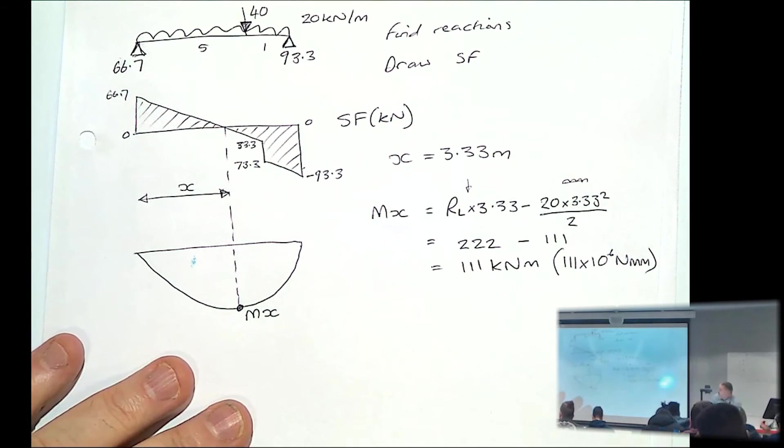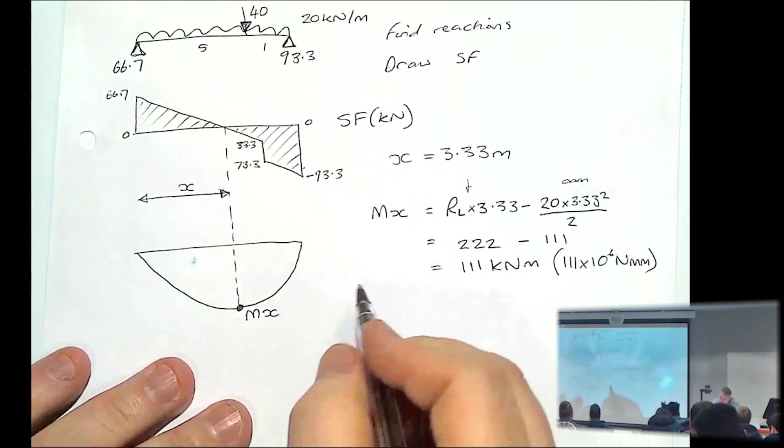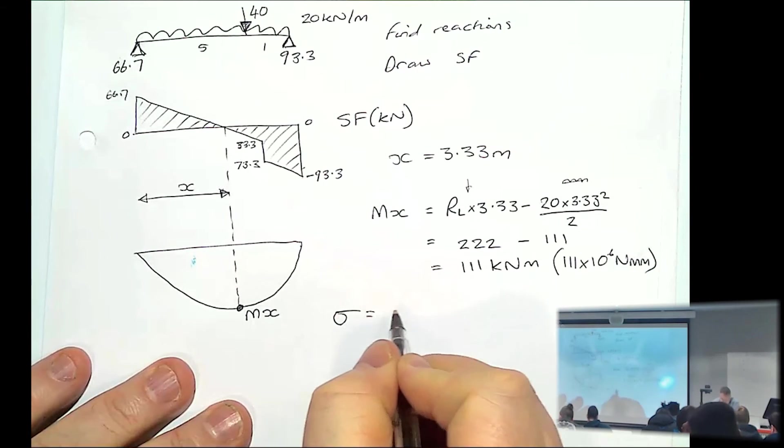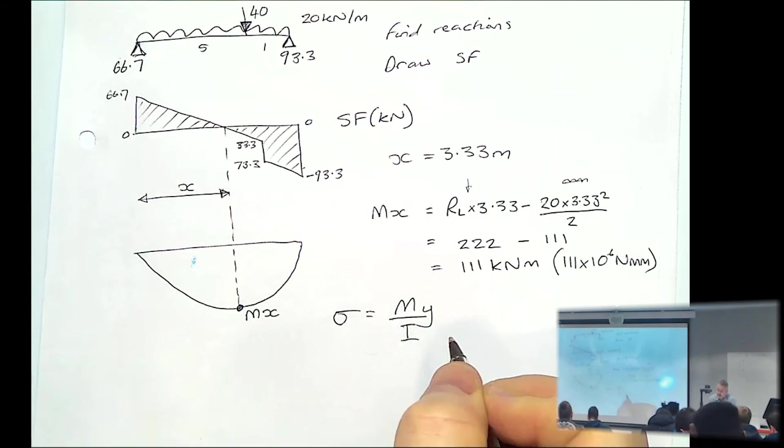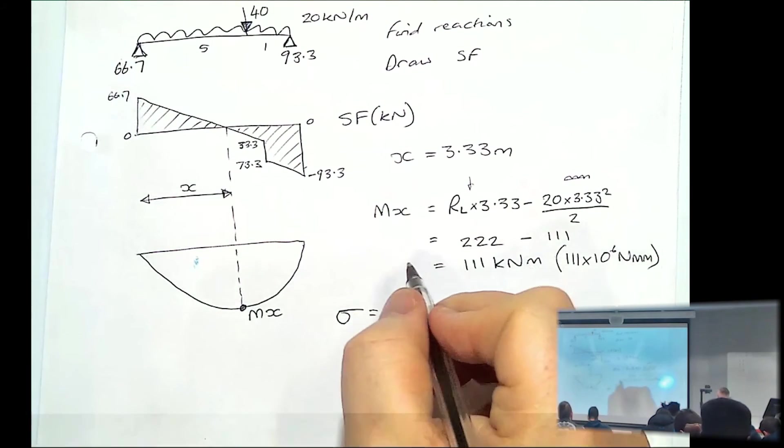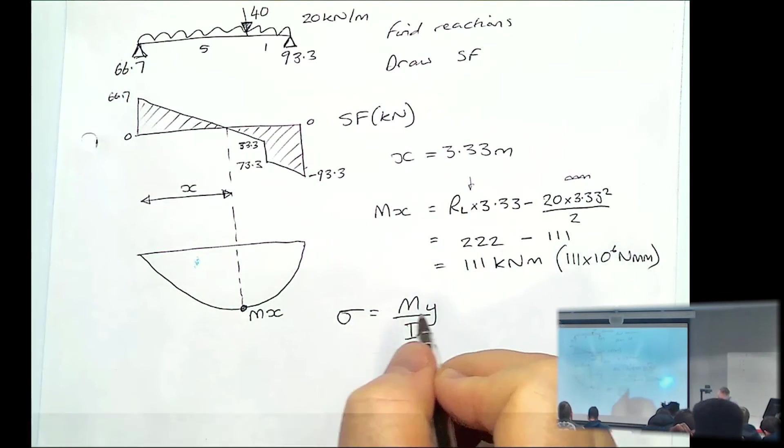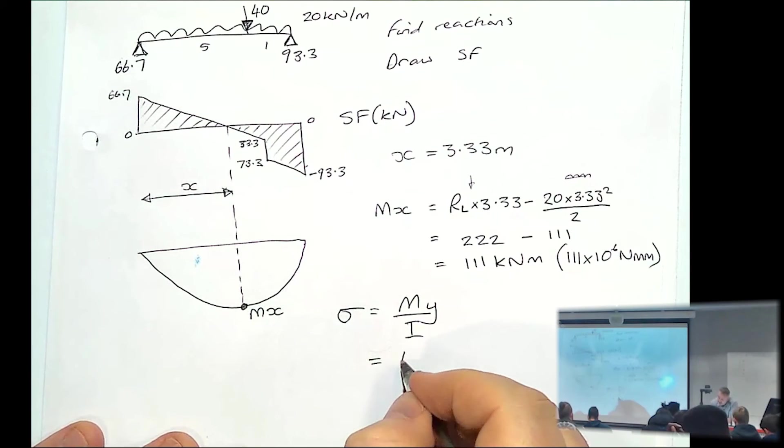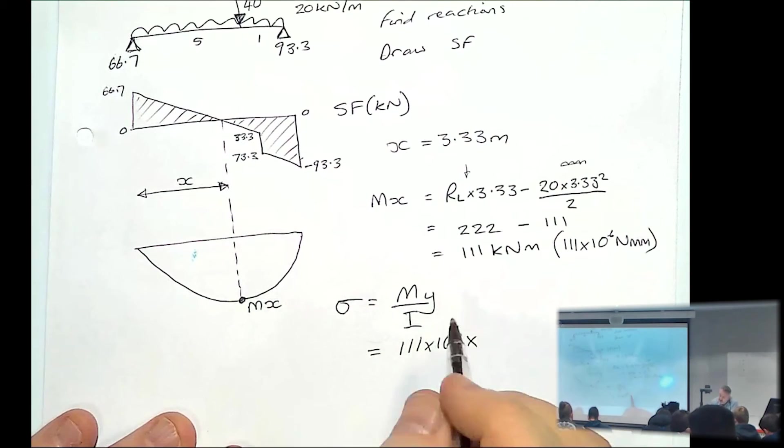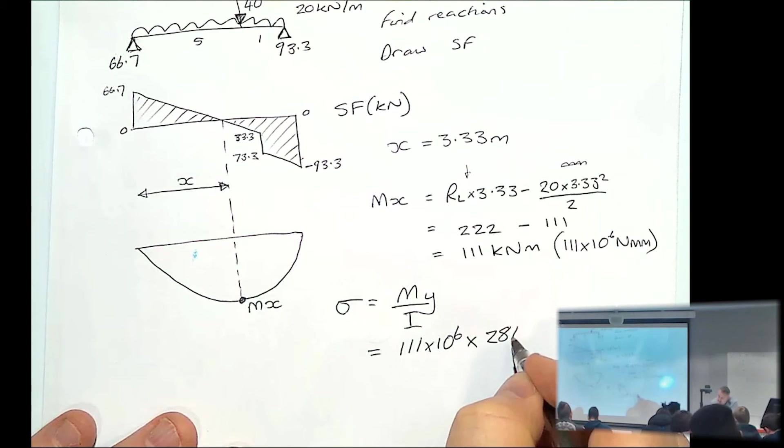So back to our formula at the very top. If we rearrange it, we've got our stress is MY over I. If we allow this applied moment to equal the moment of resistance. So if we put in our moment, 111 times 10 to the 6, times by the Y value, the largest one was 286.5 millimetres.